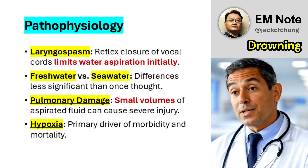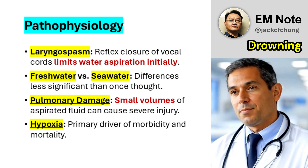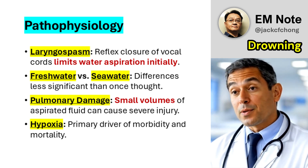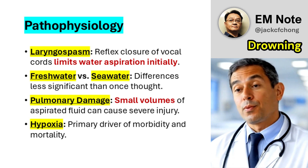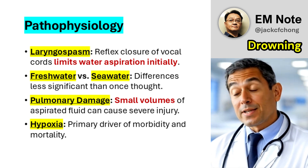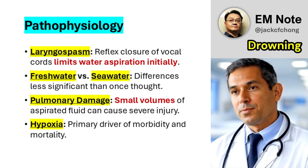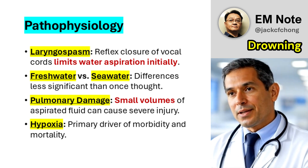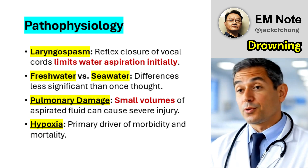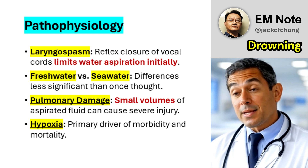The physiological process of drowning involves a complex cascade of events. Initially, laryngospasm occurs, where the vocal cords reflexively close to prevent water from entering the lungs. For decades, textbooks emphasized the difference between freshwater and seawater drowning. However, recent evidence suggests these distinctions may not be as significant as once thought.